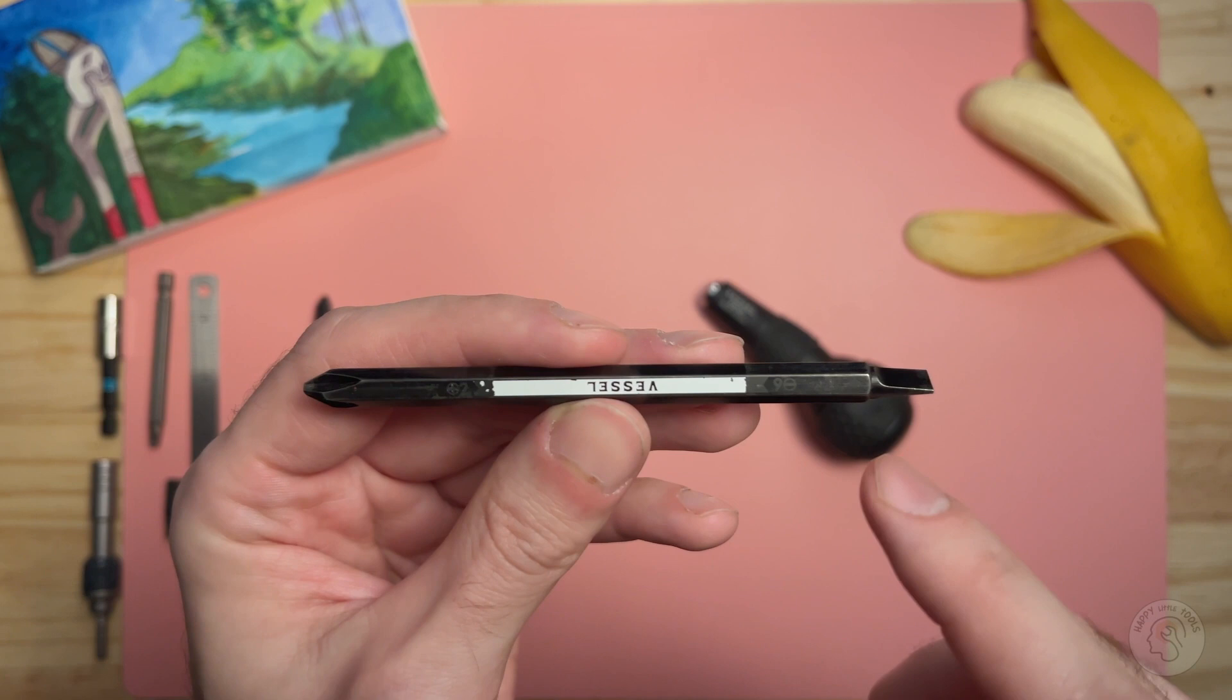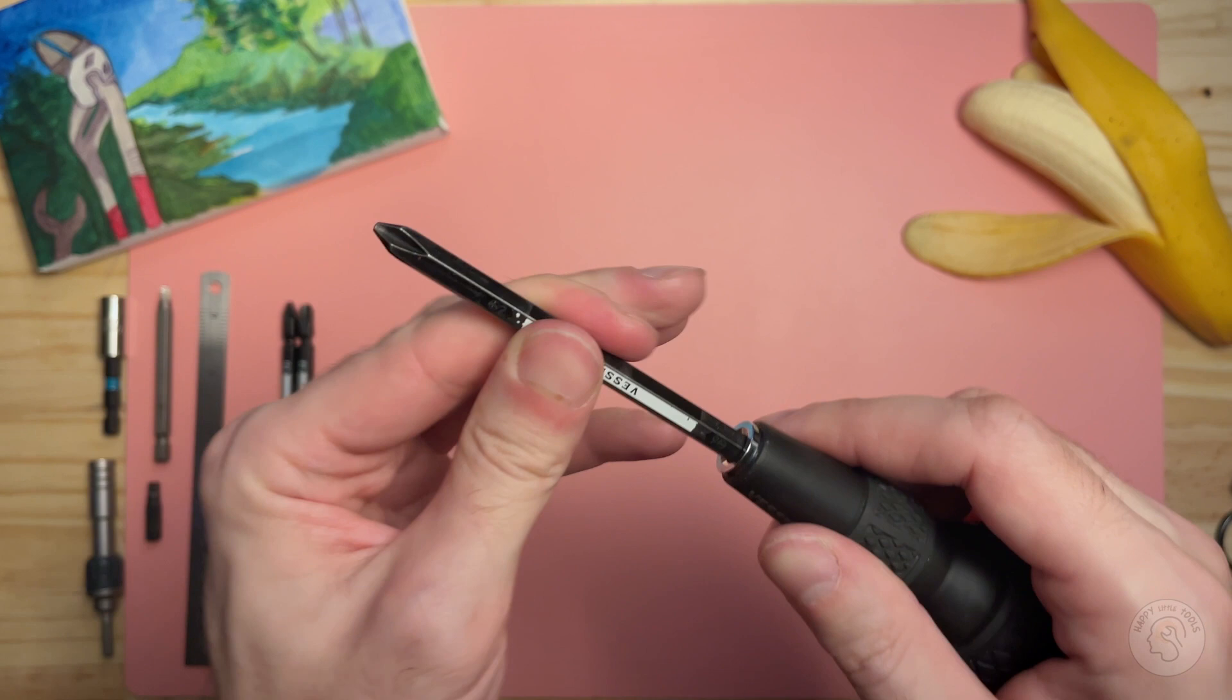So the bits are retained by friction using an internal leaf spring and it actually feels really good. I don't feel like I'm going to lose this at all.